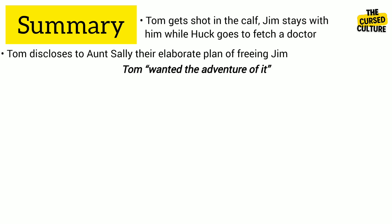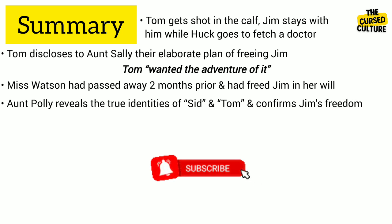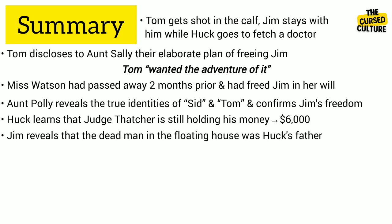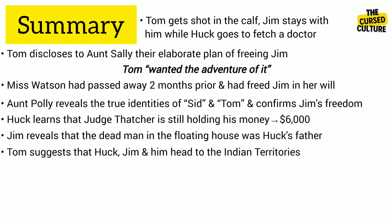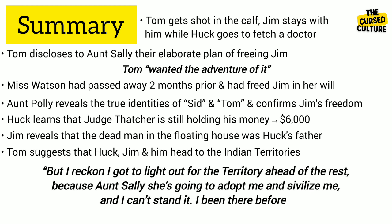As Tom recuperates, he discloses the elaborate plan to free Jim, revealing that Miss Watson had passed away two months prior and freed Jim in her will. Aunt Polly's unexpected appearance confirms the true identities of Sid and Tom and Jim's freedom. Huck learns Judge Thatcher is still holding his $6,000. Jim reveals the dead man in the floating house was Huck's father, Pap. The novel ends with Huck deciding to light out for the territory ahead, as Aunt Sally plans to adopt and civilize him.